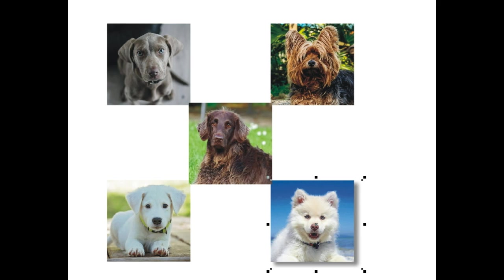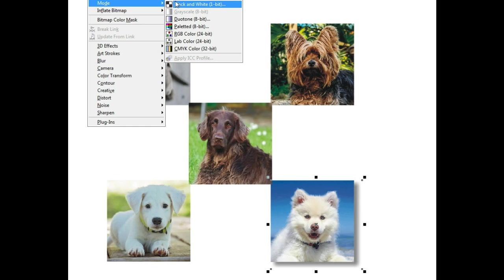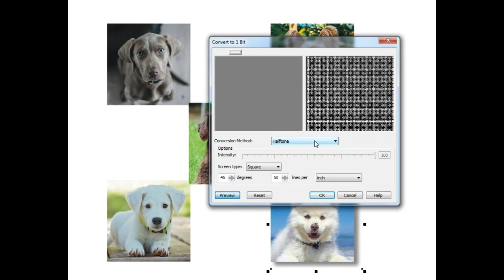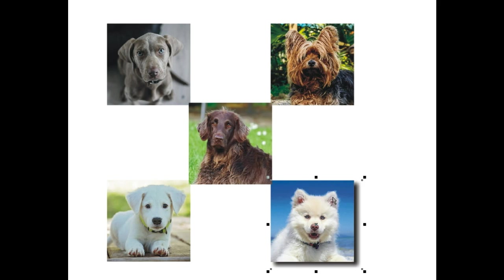Then I can convert this to a monochrome bitmap using the line art feature, and now it's a single color — just black and white. The cool thing is I can change the white to a transparency, then make my shadow whatever color I want. Since it's transparent, anything behind it will show through the shadow. That's a good effect if you're creating a PNG for a website.